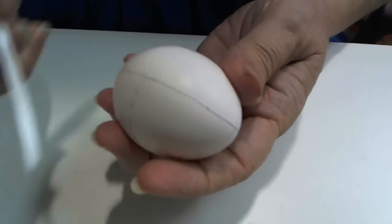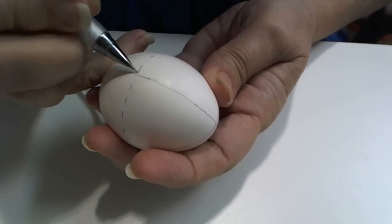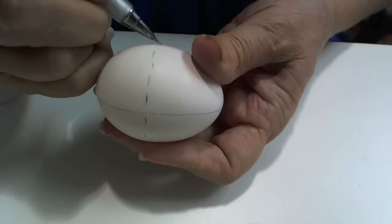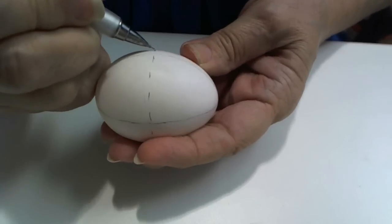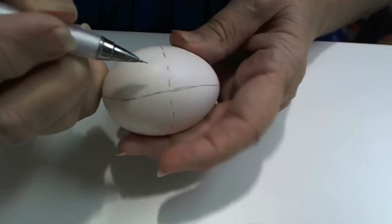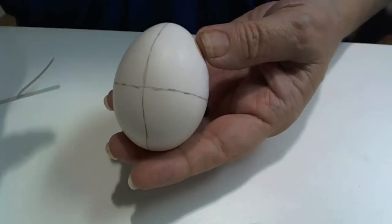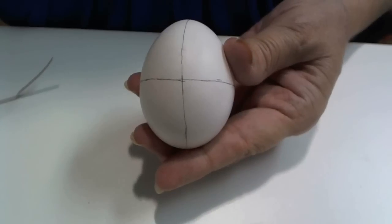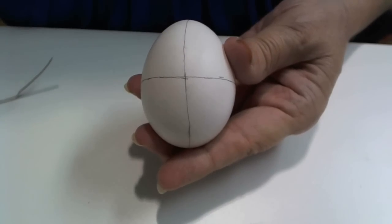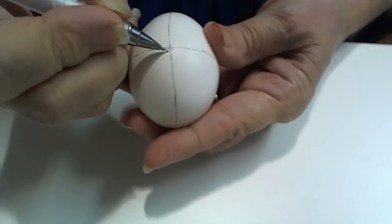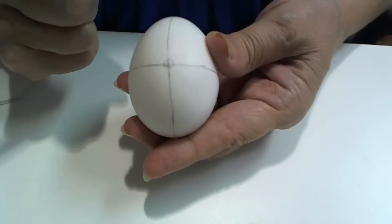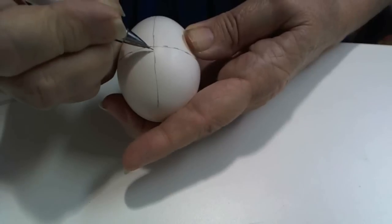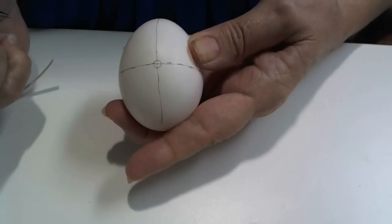And here we will just take our pencil and fill in, make a continuous line. Now we have all of our sections. The next thing I want to do for this beginner egg is draw a circle right there. I'm going to turn the egg over to the other side and draw another circle.